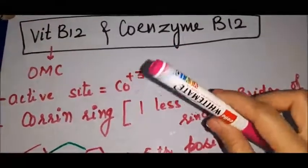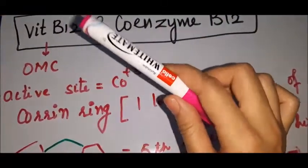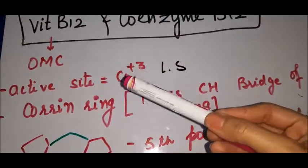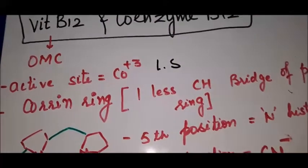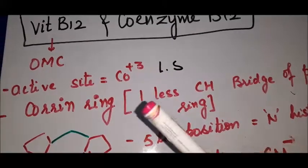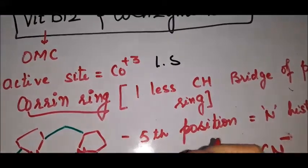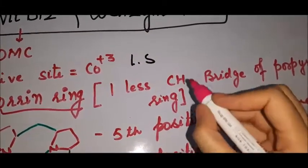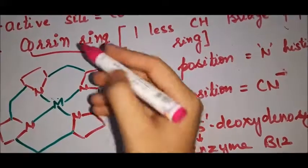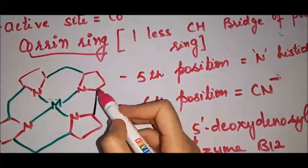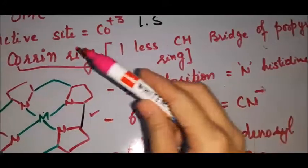Next is a very important topic: vitamin B12 and coenzyme B12. What is the organometallic compound here? The active site is cobalt³⁺ in the low spin state. A very important point is that the ring present in vitamin B12 is called the corrin ring, not the porphyrin ring. The porphyrin ring has a C–CH bridge, as we learned with hemoglobin.